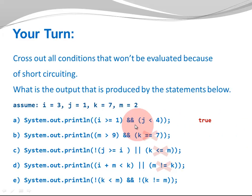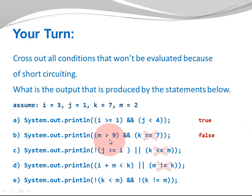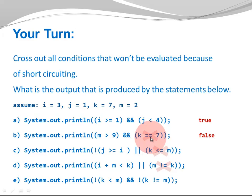My first statement: I >= 1 AND J < 4. 3 is greater or equal to 1 — that is TRUE. 1 is less than 4 — that is also TRUE. Both operands are TRUE, so my statement is TRUE. Next: M > 9. 2 is greater than 9 — this is FALSE. There's no need to evaluate the second operand, so this statement is FALSE.